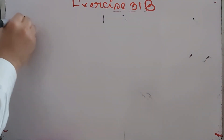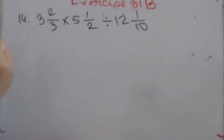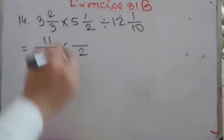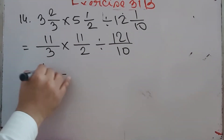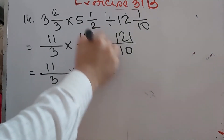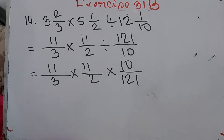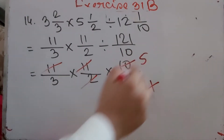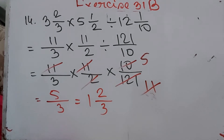Number 14: 3 whole 2/3 times 5 whole 1/2 divided by 12 whole 1/10. Convert: 3×3 = 9 plus 2 = 11/3; 2×5 = 10 plus 1 = 11/2; 10×12 = 120 plus 1 = 121/10. Multiply 11/3 × 11/2 × 10/121. Divide 121 by 11 = 11, divide 11 by 11 = 1, divide 10 by 2 = 5. Answer is 5/3 = 1 whole 2/3.